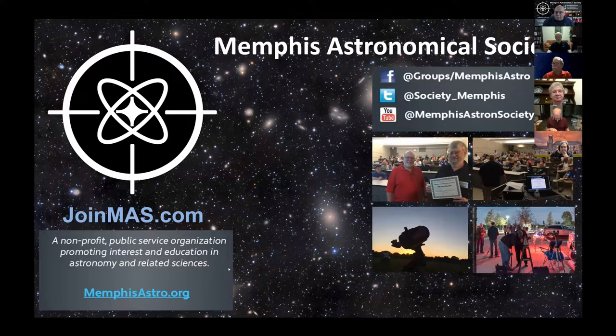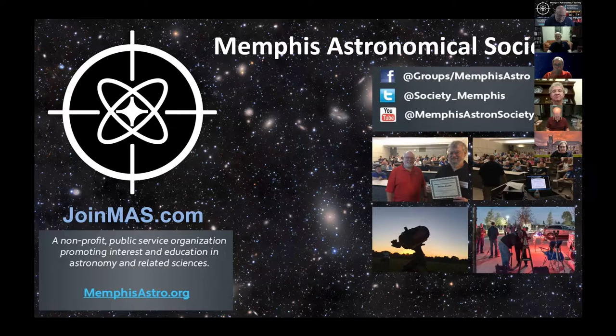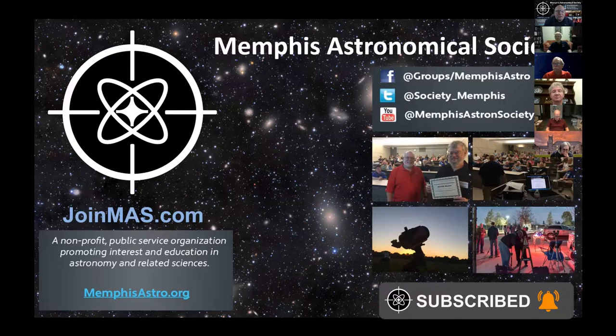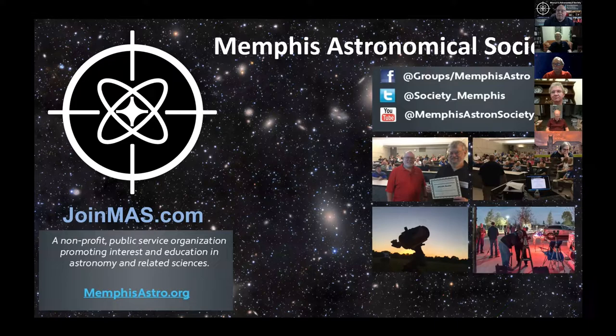We are the Memphis Astronomical Society. We are a public service educational society. We've been a 501c3 society since 1957. We try to have at least one meeting a month where we make presentations about astronomy and related sciences, and then have public observing sessions every month. You can follow us on Facebook, Twitter at society_memphis, and on our YouTube channel.